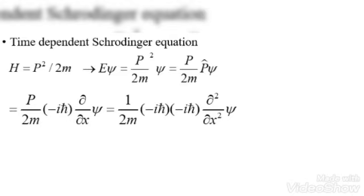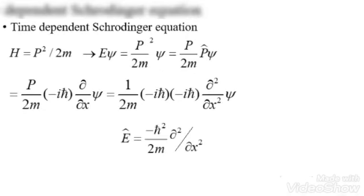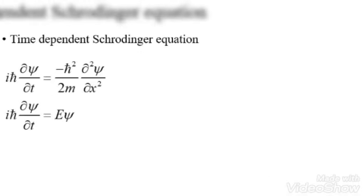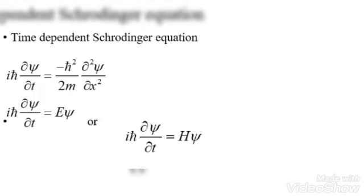We can use the momentum operator to rewrite the equation. By cancelling out the wave function from both sides, we can write the energy operator based on the displacement operator. This might not be standard in mathematics, but in physics it is quite normal, so we can say for sure that the energy operator can be written as follows.